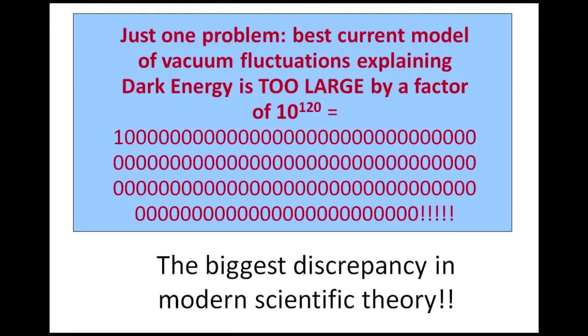When the calculation is done, the predicted value is way too large and is off by 120 orders of magnitude. So while it is not a surprise to scientists that there is dark energy, the measured value is just way too small. This discrepancy is the largest of any comparison between data and modern scientific theory. This is what makes dark energy so interesting to scientists and the subject of many new experiments to measure its properties.